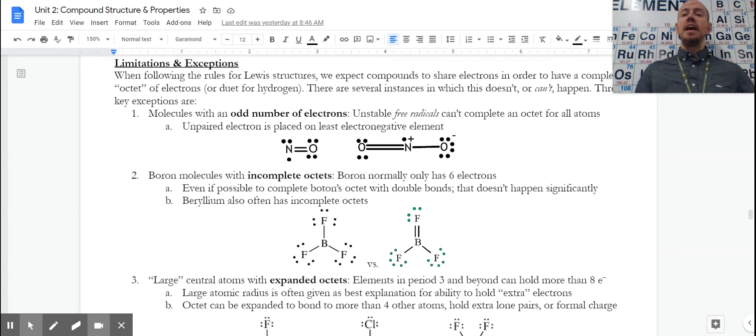The first set is any time you have a molecule with an odd number of electrons. This can happen for all sorts of different reasons, but when you have an odd number of electrons, obviously it's impossible to pair them all up. If you can't pair them all up, you can't draw a picture in which everything has eight. These molecules tend to be unstable.